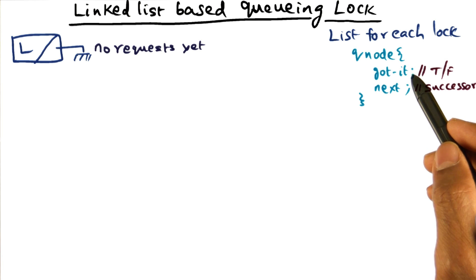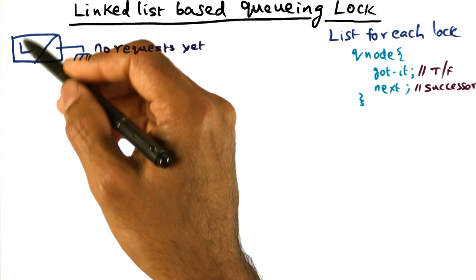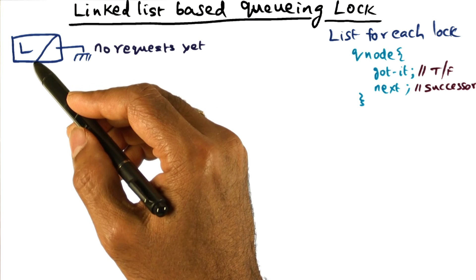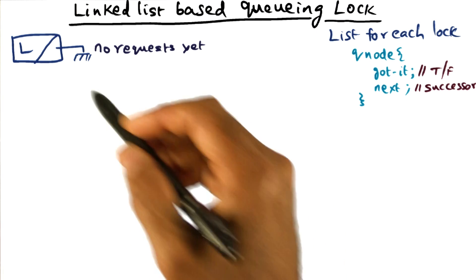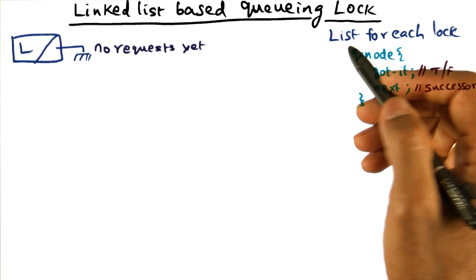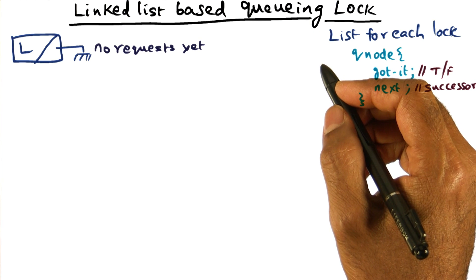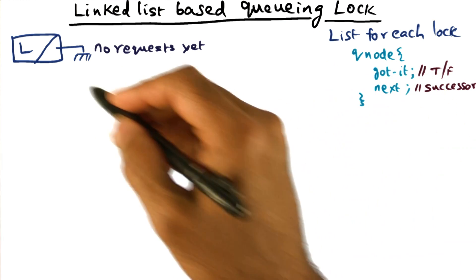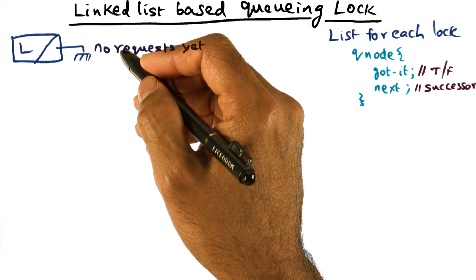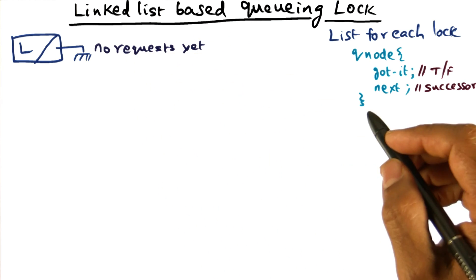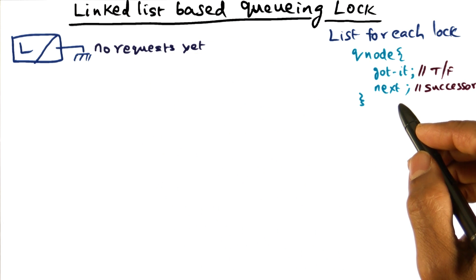Every queue node is associated with a requester. The dummy node that we start with is representing the lock itself. Since we are implementing a queue, fairness is automatically assured. The requests get queued up in the order in which they make the request. We have fairness built into this algorithm, just like Anderson's array-based queue lock.